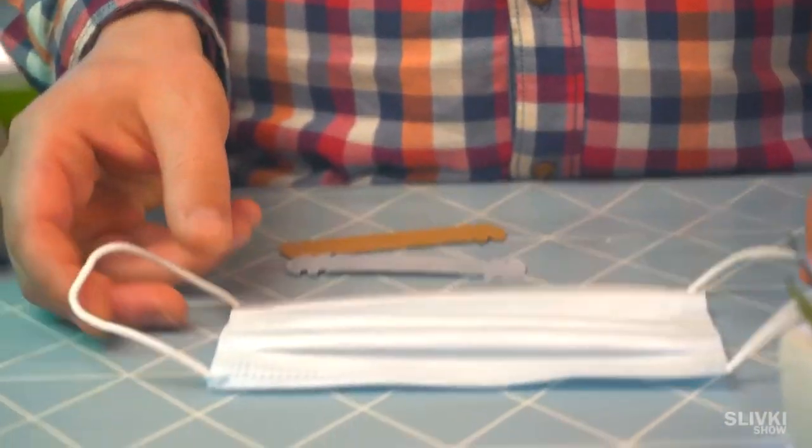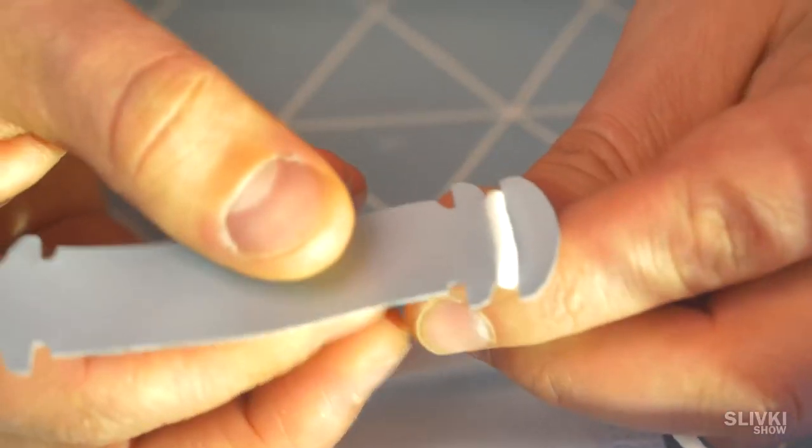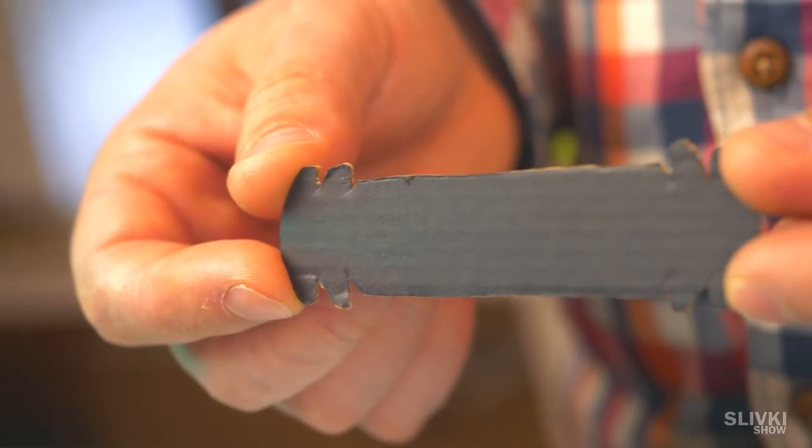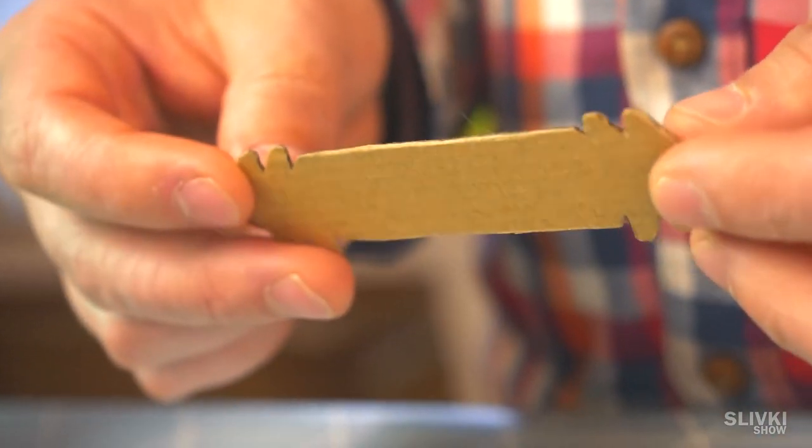You need to put the elastic mask on the hooks, like shown in the video, and it will not rub a thing anymore. Theoretically, you can make a piece from cardboard.